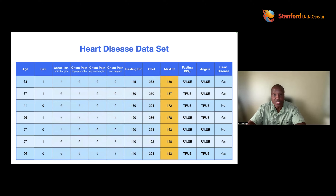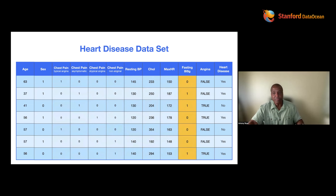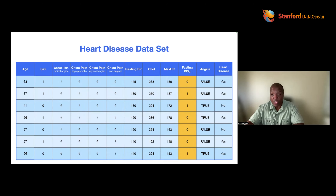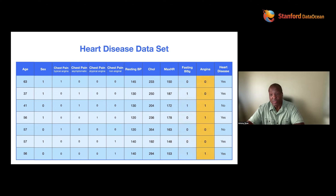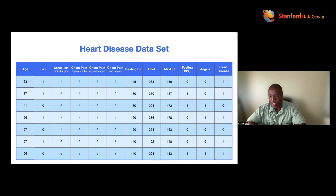Resting blood pressure: numbers, we're good. Cholesterol: numbers. Max heart rate: numbers, we're good. Whether someone has high fasting blood sugar: zero for false, one for true. Exercise-induced angina: false is zero, true is one. And then presence of heart disease: yes converts to one, no converts to zero. You've transformed your data — the machine is ready for this.